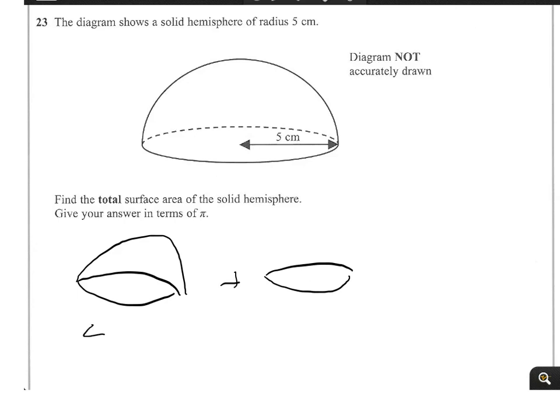Our formula for the full sphere, for its surface area, is 4 pi r squared. Well, we only want half of that, so we're going to use 2 pi r squared.